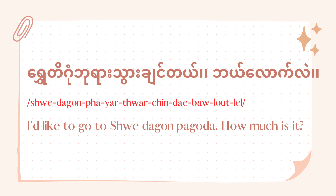In Burmese we say: Shurigong Paya Twa Jinde Balao Le. Breaking it down: Shurigong Paya means Shwedagon Pagoda, Twa Jinde means 'I would like to go' — Twa means 'to go', Jhin is a particle for 'want/would like'. Balao Le is the question word for 'how much'. So the full phrase means 'I would like to go to Shwedagon Pagoda, how much is it?'